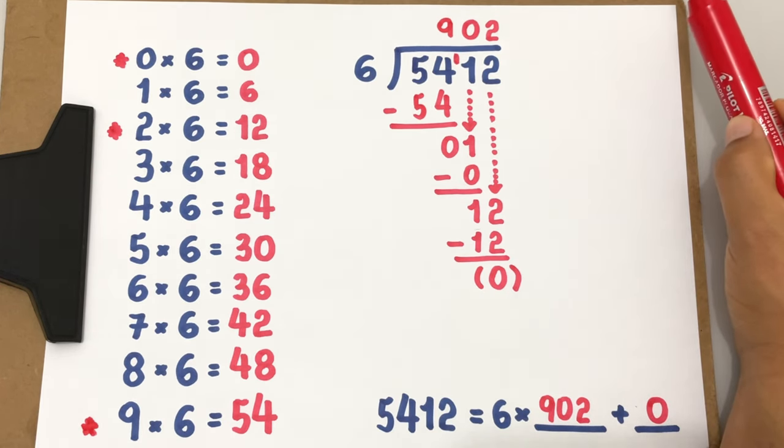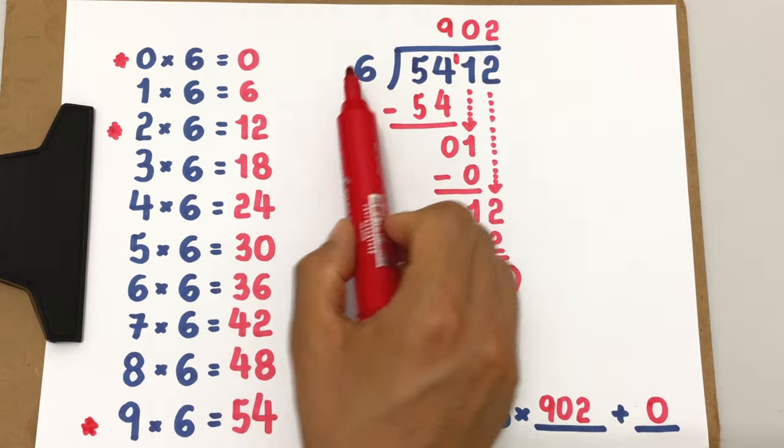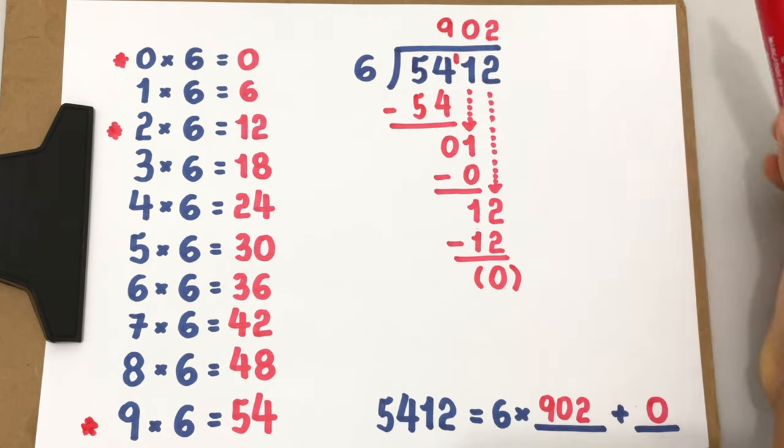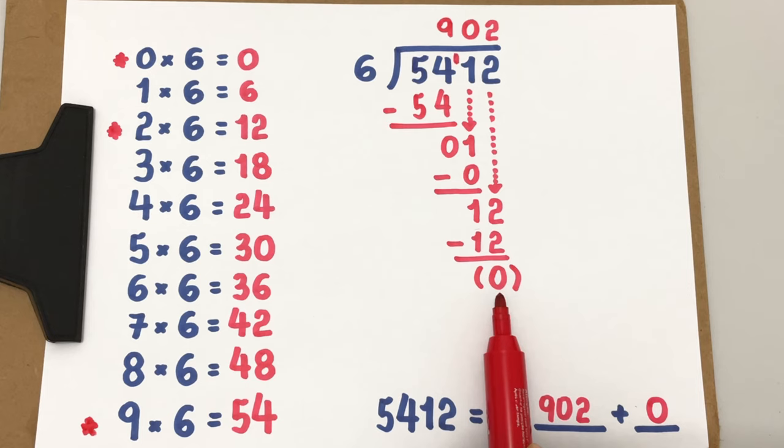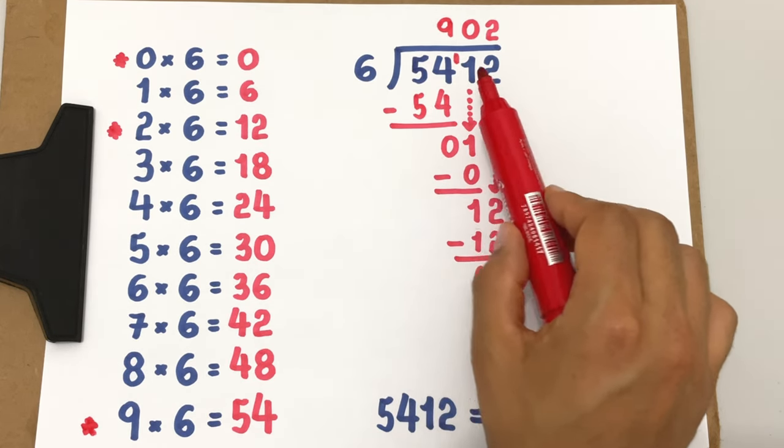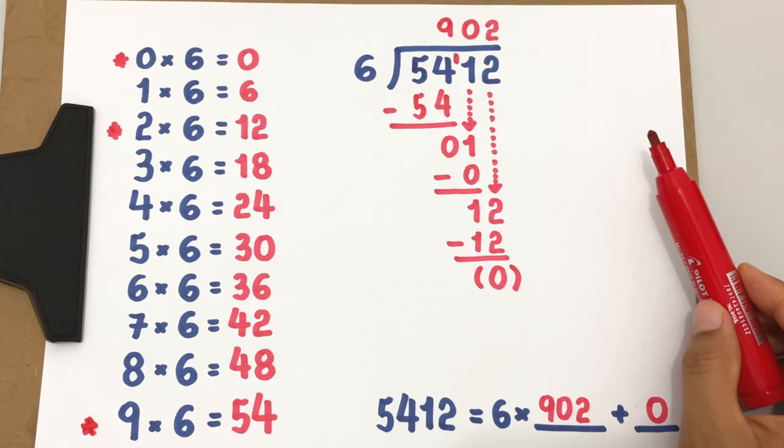If you want to check your work, you can multiply the divisor and the quotient, get the product, and then add the remainder. By doing all that, you are supposed to find the dividend, if your work was done correctly.